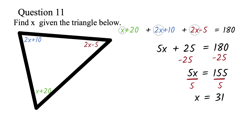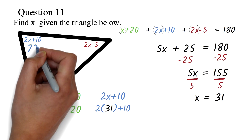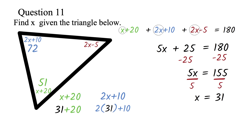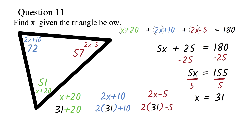We could have been asked to find the actual angles. We replace x with 31 in each angle. For x plus 20: 31 plus 20 gives 51 degrees. For 2x plus 10: 2 times 31 plus 10 gives 72 degrees. For 2x minus 5: 2 times 31 minus 5 gives 57 degrees.